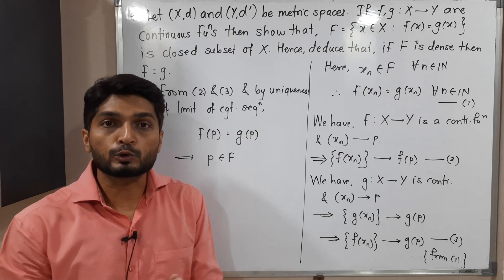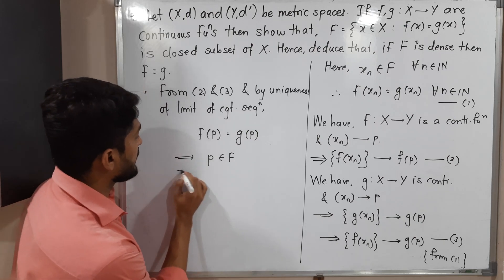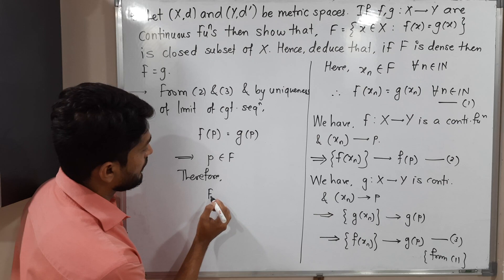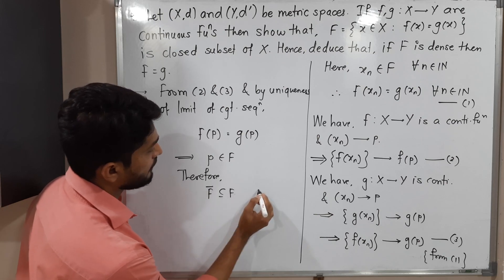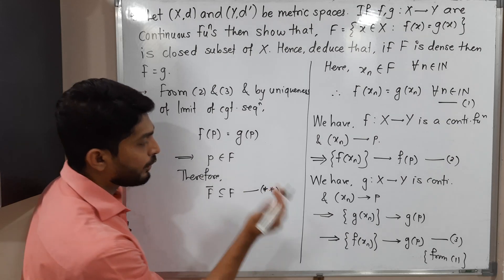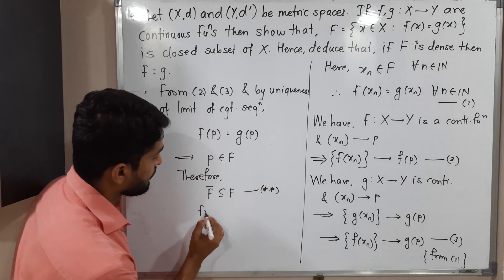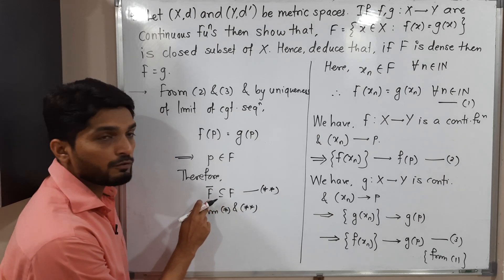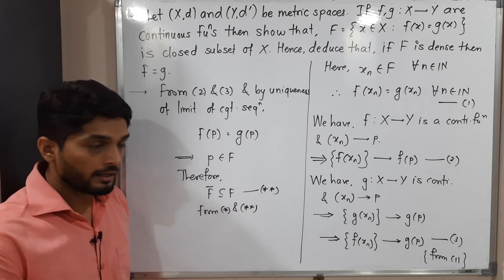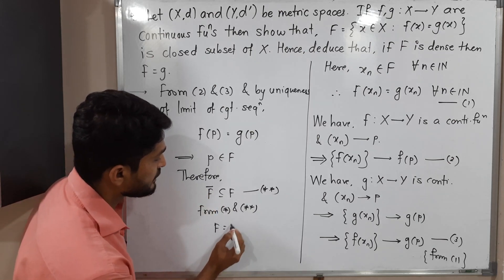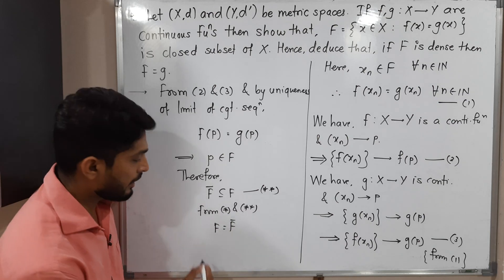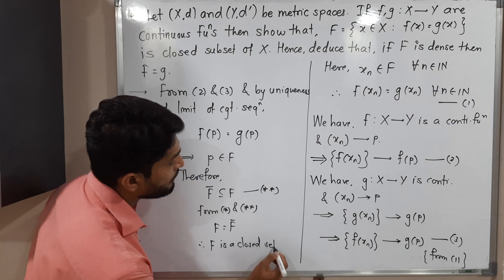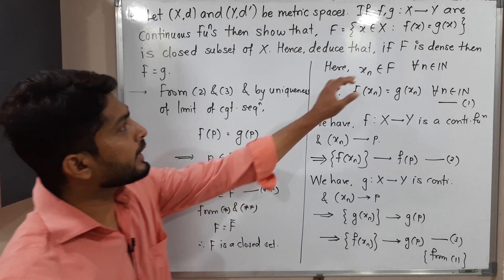We started with p ∈ F̄ and proved p ∈ F, so F̄ ⊆ F — call this (★★). From (★): F ⊆ F̄, and from (★★): F̄ ⊆ F, we conclude F = F̄. Therefore we can declare F is a closed set. In this way we have proved the set F is closed.